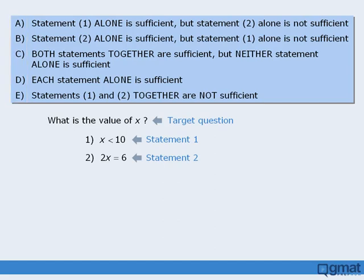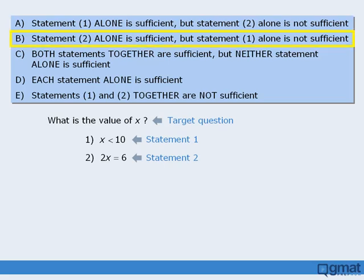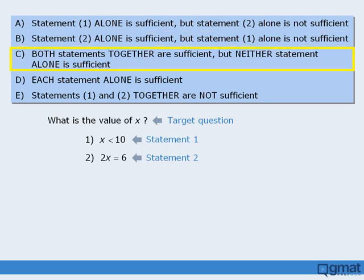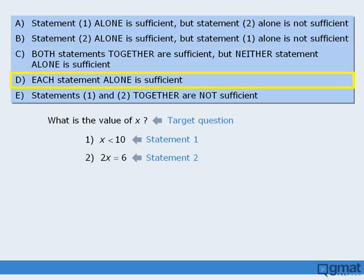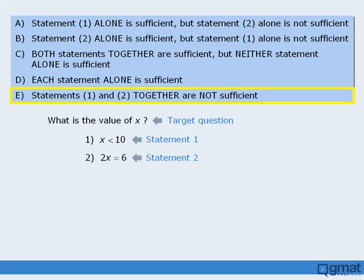The five answer choices are all related to whether or not each of the two statements provides enough information to answer the target question. Select answer choice A if statement 1 alone is sufficient but statement 2 alone is not. Select B if statement 2 alone is sufficient but statement 1 alone is not. Select C if statements 1 and 2 together are sufficient but neither alone is sufficient. Select D if each statement alone is sufficient, and select E if statements 1 and 2 together are not sufficient.